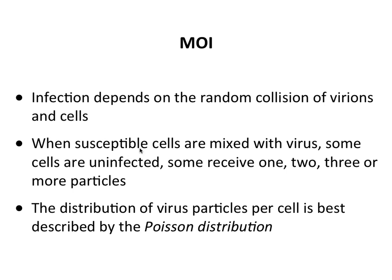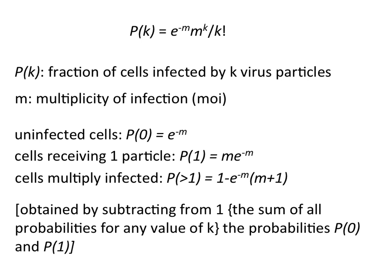The infection of cells by viruses is a random event depending on the collision of viruses and cells. When you mix cells with virus, some susceptible cells will not be infected, some will get one particle, some will get two, some will get three or more. Think of it this way: if you have a hundred buckets and throw a hundred tennis balls all at once, not every bucket would receive exactly one ball — some get none, some get one, two, or three.